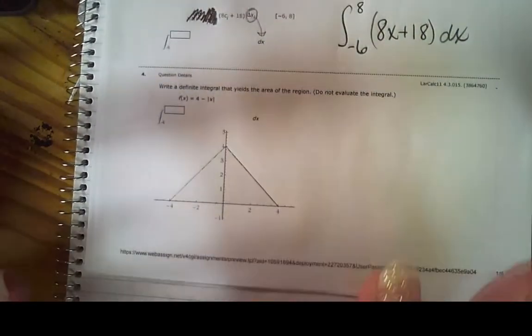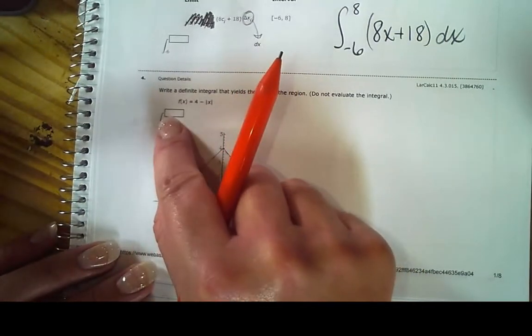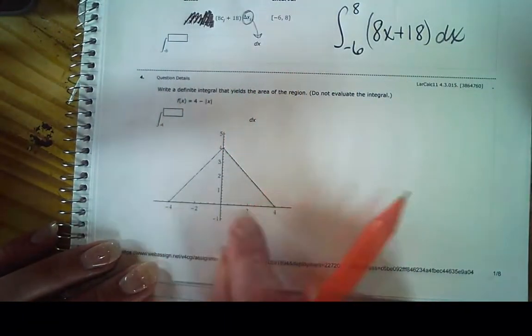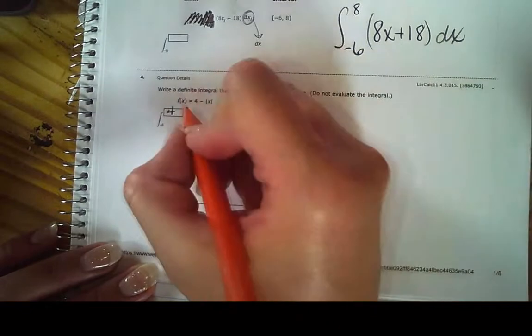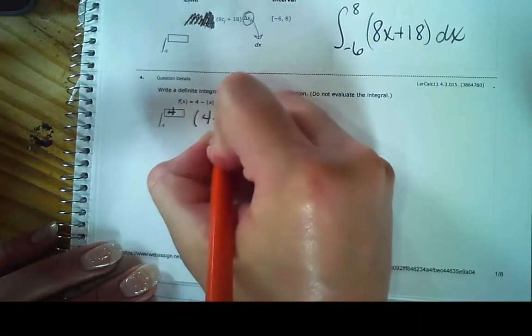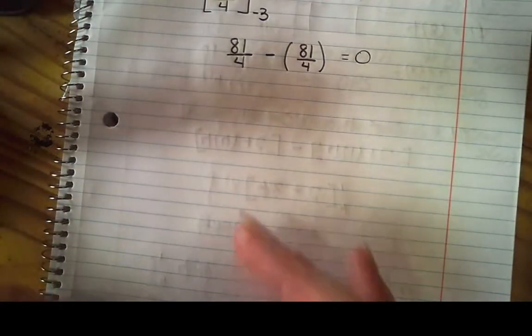Okay, so now all we're going to do is set this up. So I want to go from where to where. So I'm going to go from negative 4 to positive 4. And then what is my function? My function is 4 minus the absolute value of x, dx. So we're just going to set a couple of them up.